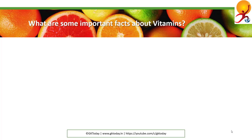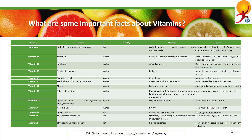What are some important facts about vitamins? Vitamin A includes retinol, retinal, and four carotenoids. It is soluble in fat and deficiency can cause night blindness, hyperkeratosis, and keratomalacia.